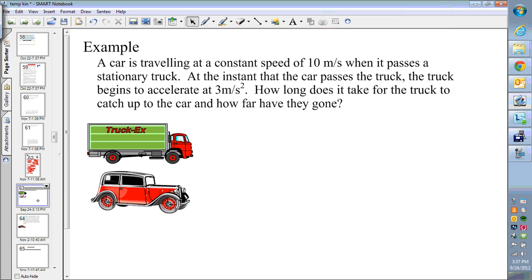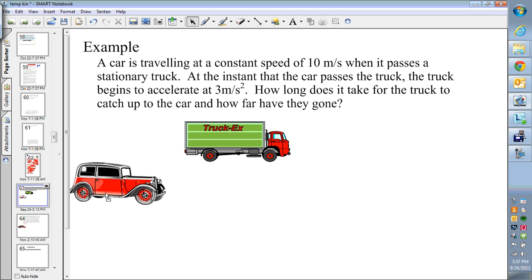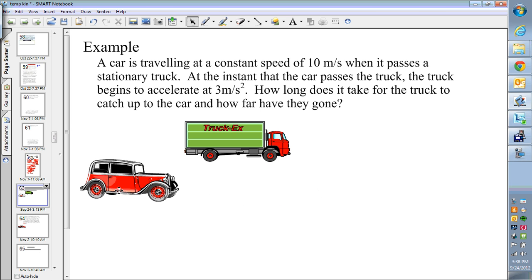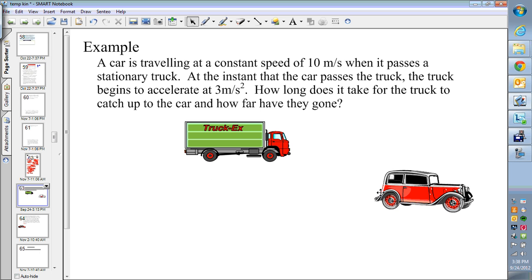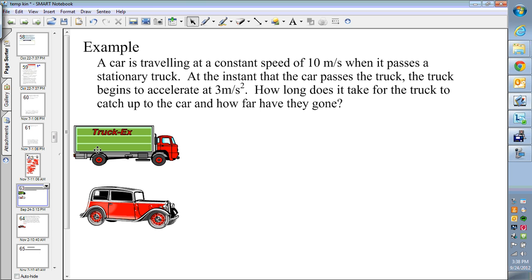Okay, so let's actually do an example. Let's say you have a car traveling at a constant speed of 10 meters per second when it passes a truck that's standing still. Okay, so at the instant that the car passes the truck, the truck begins to accelerate at 3 meters per second squared. How long does it take for the truck to catch up and then pass the car? And then how far have they gone? So lots of information, we're going to separate them up.